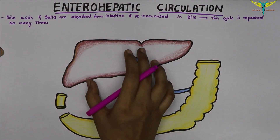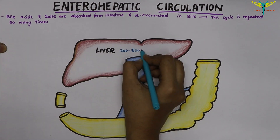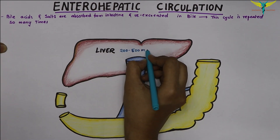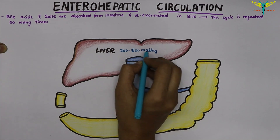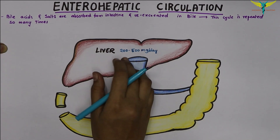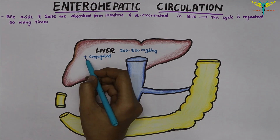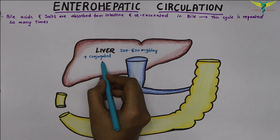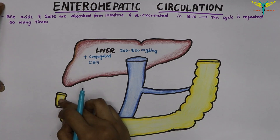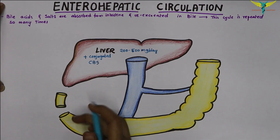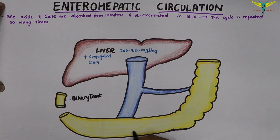The bile salts are produced in the liver. The liver secretes 200 to 500 mg per day of bile salts, and they are conjugated. After the process of conjugation, these conjugated bile salts — the CBS — enter the intestine through the biliary tract.